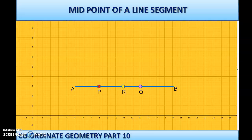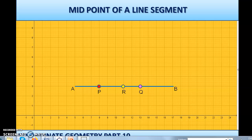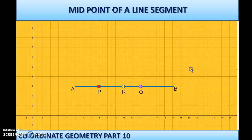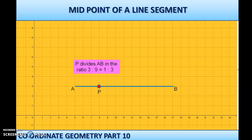Let us take another case with a line segment AB and three points P, Q, and R. Let us write the ratios for each point. For point P, counting units from A to P gives 3, and from P to B gives 9. So P divides AB in the ratio 3:9, which simplifies to 1:3. For point Q, counting from A to Q gives 8 units, and from Q to B gives 4 units — ratio 8:4, which simplifies to 2:1.